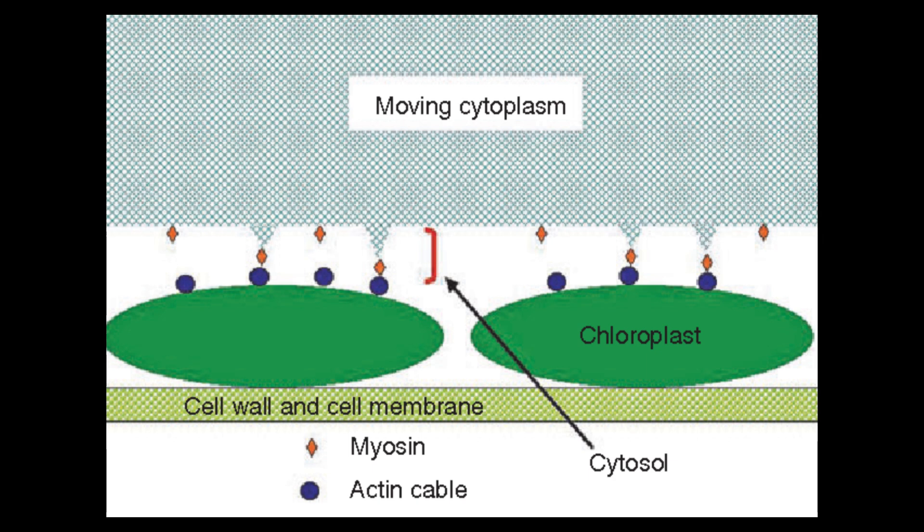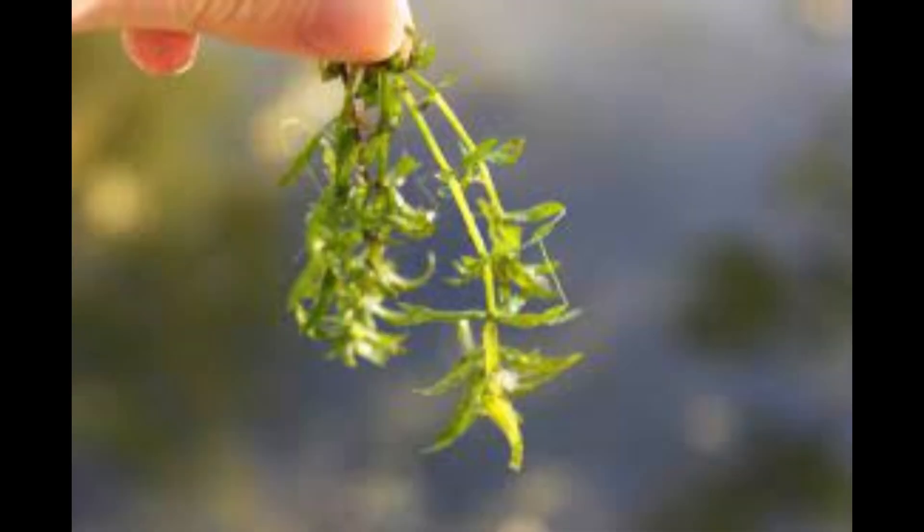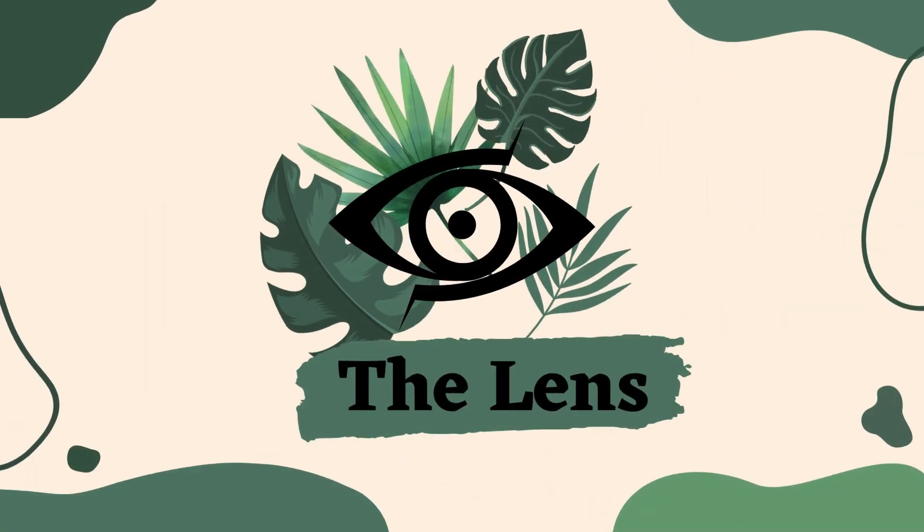As the myosin molecules walk along the actin filaments, dragging the organelles with them, the cytoplasmic fluid becomes entrained and is pushed along. Cytoplasmic flow rates can range between 1 and 100 microns per second. I hope that this video has provided basic knowledge about chloroplasts and cytoplasmic streaming.